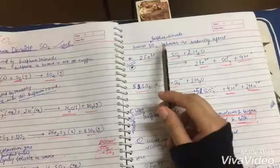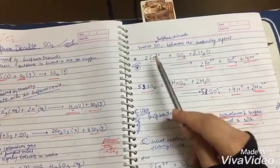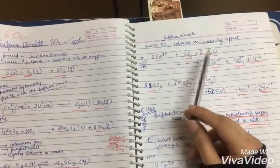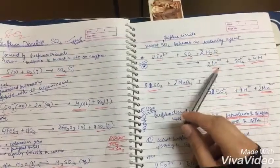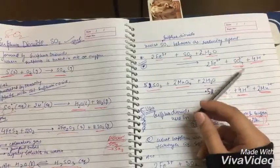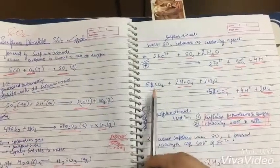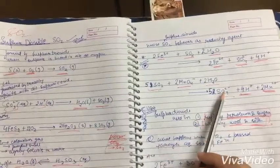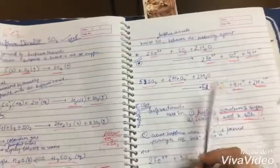Moist SO2, sulfur dioxide, behaves as a reducing agent. These equations are also important and frequently asked. Fe3+ plus SO2 plus H2O gives us Fe2+ plus SO4^2- plus H+. SO2 plus MnO4- plus H2O gives us SO4^2- plus H+ plus Mn2+.